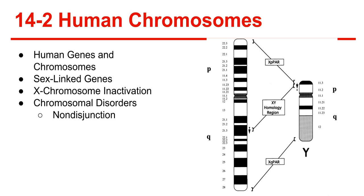Nondisjunction occurs when homologous chromosomes fail to separate during meiosis. If nondisjunction occurs, abnormal numbers of chromosomes may find their way into the gametes. Down syndrome is a chromosomal disorder that occurs when trisomy occurs — trisomy means three bodies. Instead of having one pair of chromosomes, there are actually three. The most common type is three copies of chromosome 21, which results in Down syndrome.